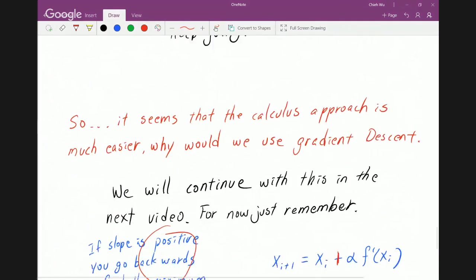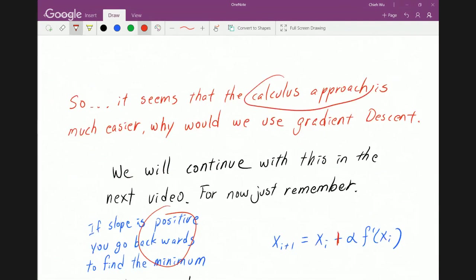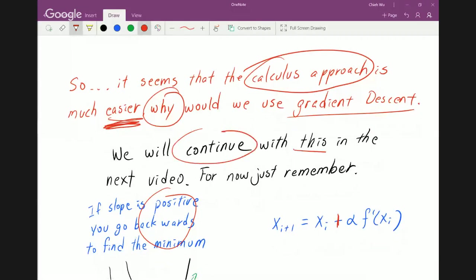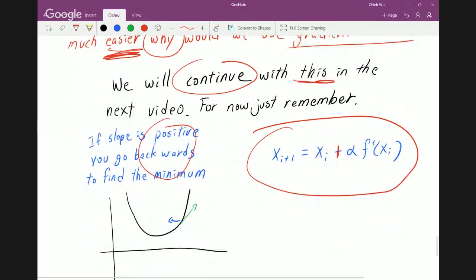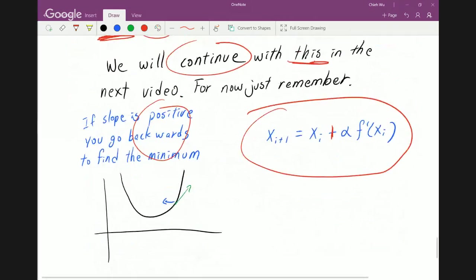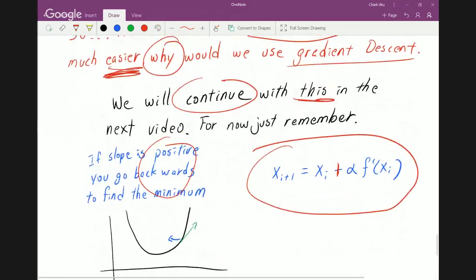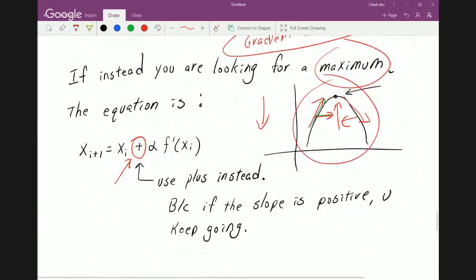So I think it's pretty obvious that the calculus approach seems to be much, much easier. So the natural question to ask is why would we want to use gradient descent at all if calculus approach is good enough? Well, we will continue with this in the next video. But just for now, just remember this equation. Try to write like a small program so you can solve it yourself in C or C++, whatever. And I will see you in the next video.